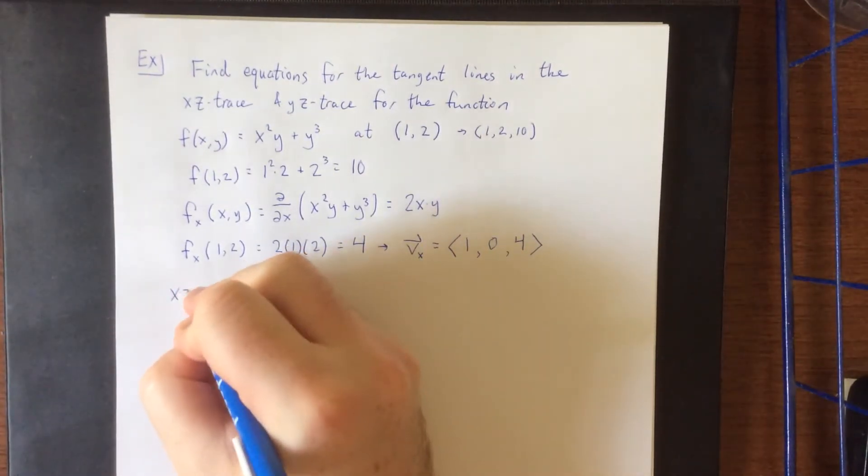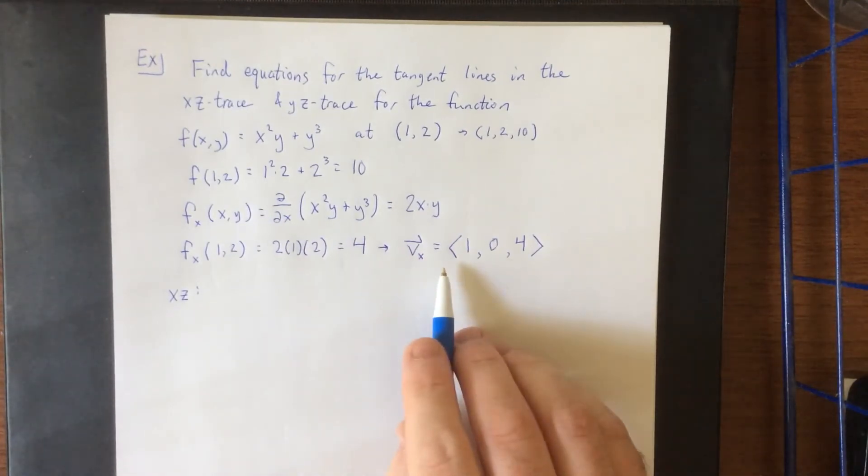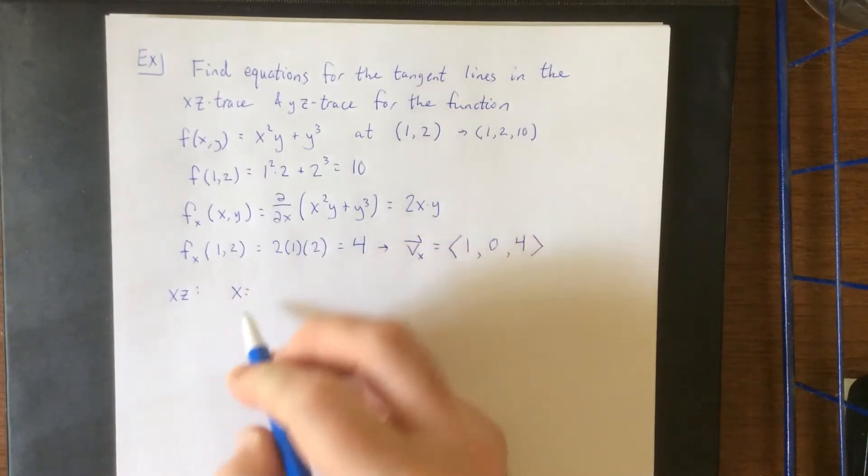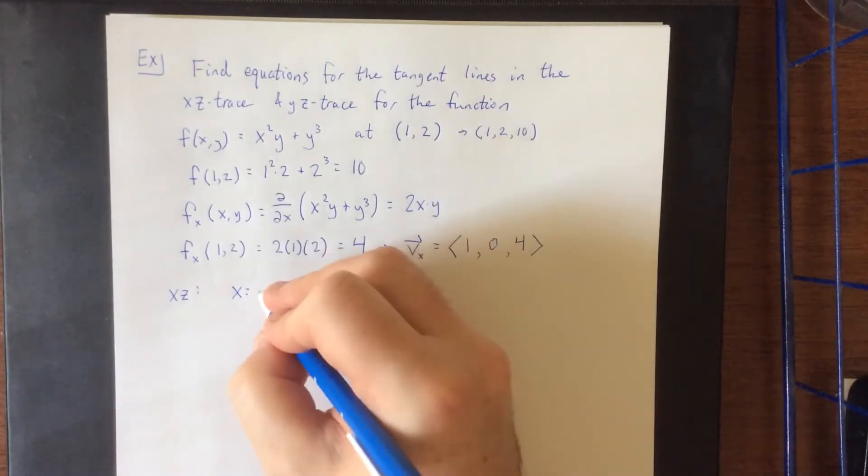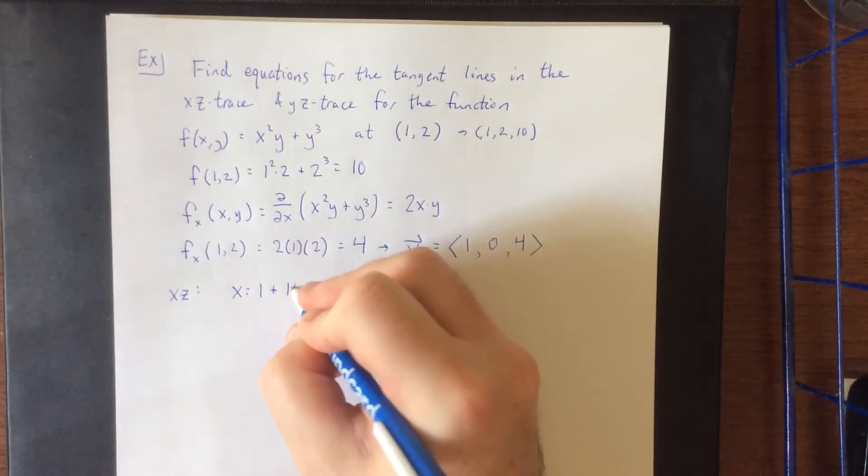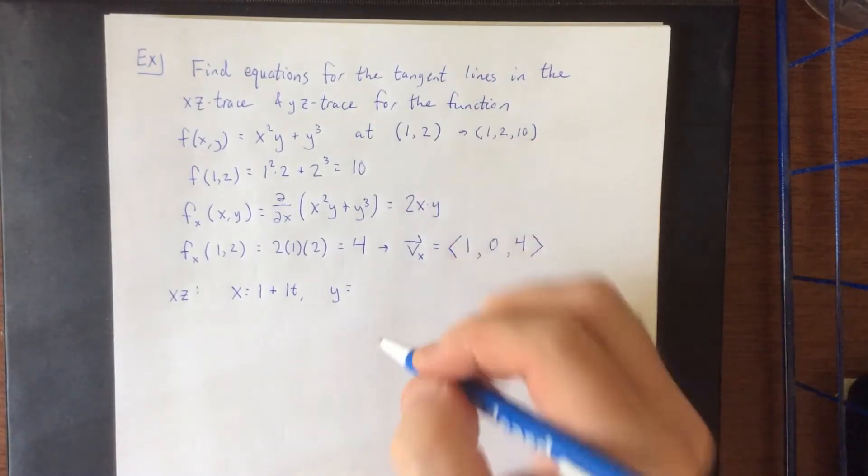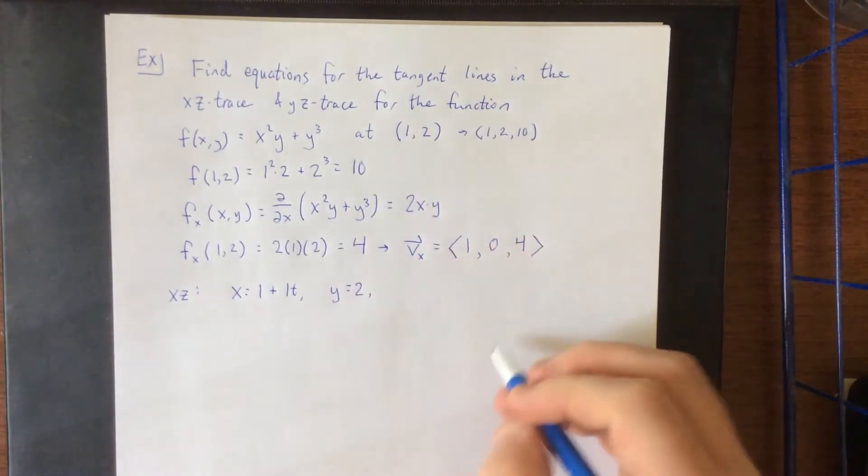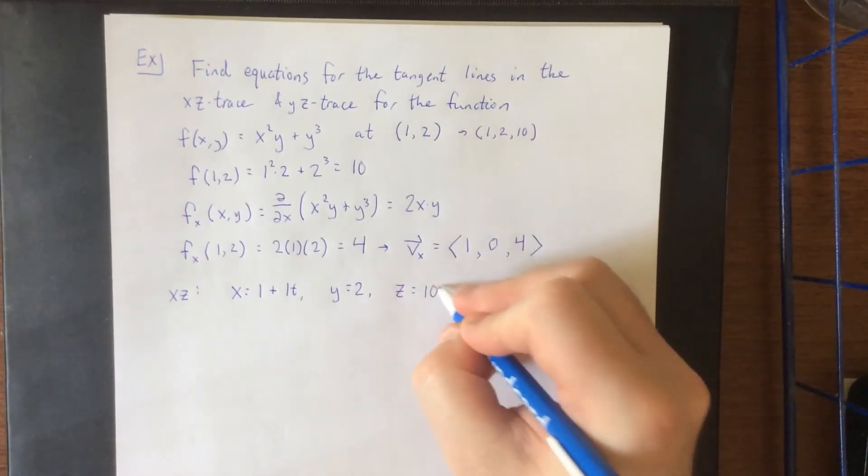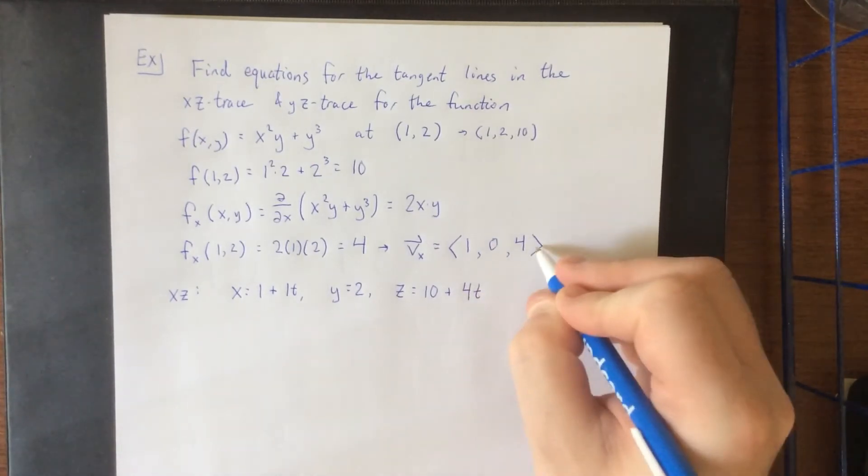So in the xz trace the equation of our line would be the following. We'll go with the parametric form. This is going to be x equals the x coordinate was 1 and the components of the vector is 1 so that'll be 1 plus 1t. Y doesn't change. Y is being held as a constant so that'll be y equals 2 and z would be starting point 10 plus 4 times t.